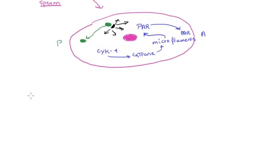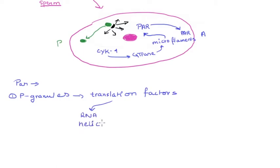The PAR proteins are a collection of proteins which help to localize many other components, and one of the components is the P granules. The P granules are a collection of some translation factors or regulators. These are translation factors, and they contain certain RNA helicases. They contain poly-A polymerases, and they also contain certain initiation factors, certain translation initiation factors.